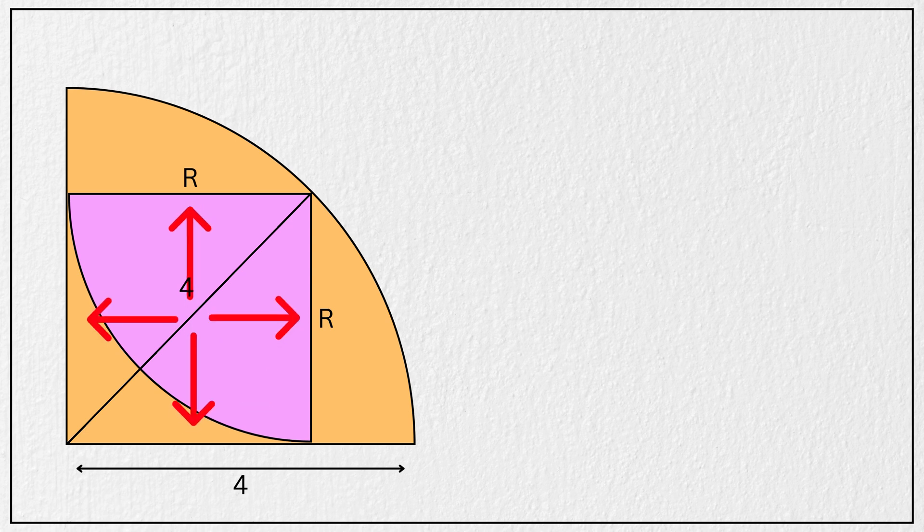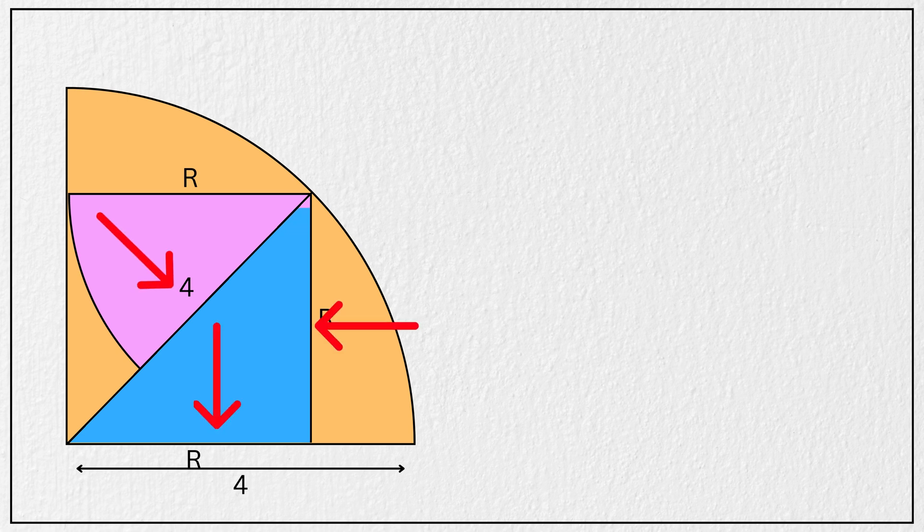And since this is square, that means this is also equal to R units. Now look at this blue right triangle formed by the radii of both quarter circles. Here the hypotenuse is 4 units, the base is R units, and the height is R units.